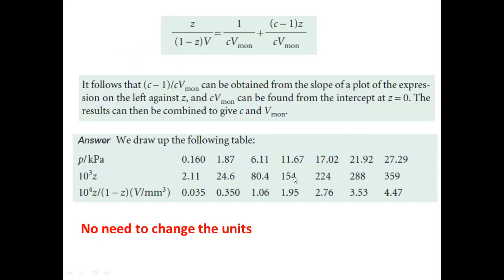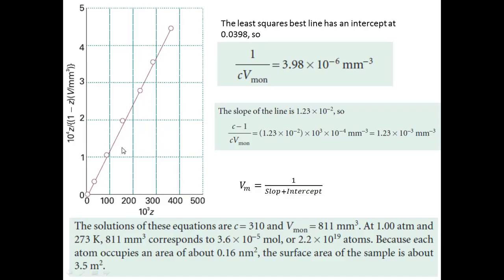Taking 10⁻⁴ as a common factor from the y-axis: when multiplied back with the intercept value 10⁻², it becomes 10⁻⁶. The slope from the graph is 1.23×10⁻³. Since slope = Δy/Δx, with Δy having exponent 10⁻⁴ and Δx having exponent 10³, multiplying the common factors gives the actual slope. Summing slope and intercept then gives the value of vm. Your target is then to calculate the surface area and specific surface area using vm.